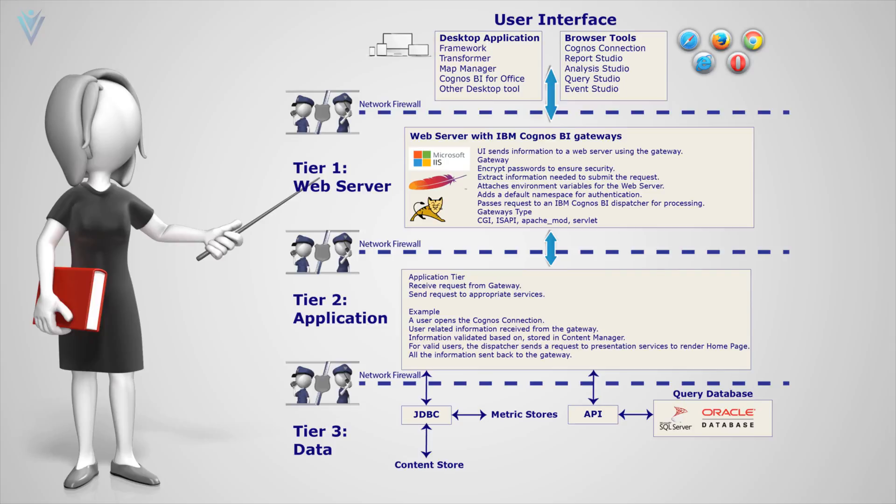For proper communication between all the servers we need to create the appropriate rules. For example, if you want to allow an end user to access IBM Cognos web server, then we need to allow TCP on port 80. If you want to learn more about network firewall rules, how to install IBM Cognos and configuration, then you need to check the IBM Cognos administration course. This video is only focused on IBM Cognos architecture.